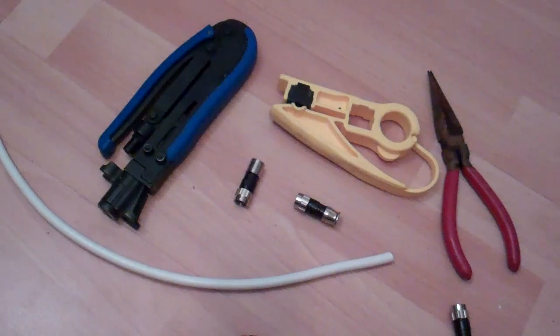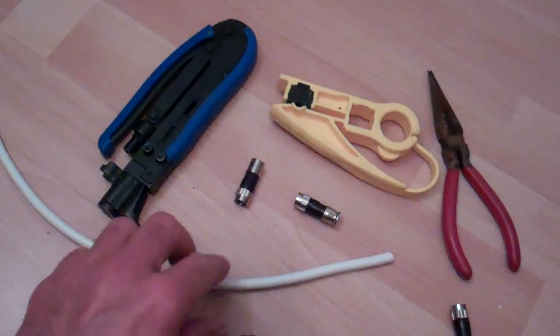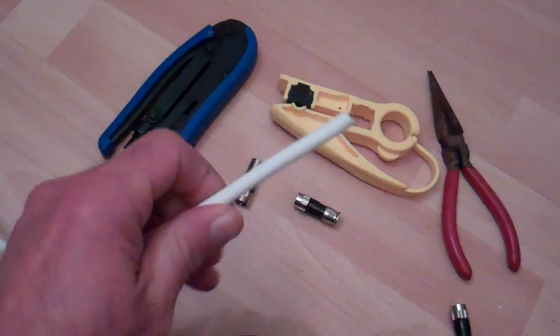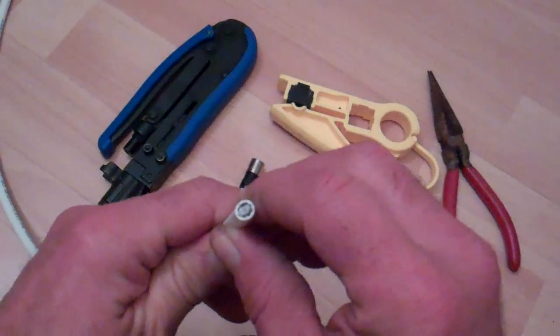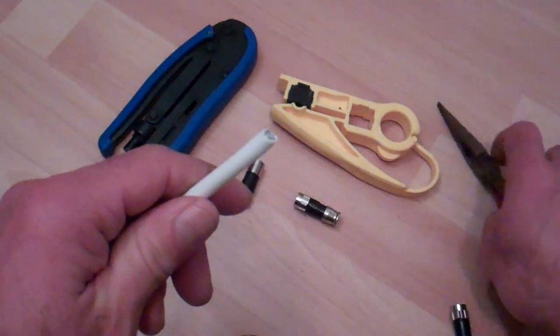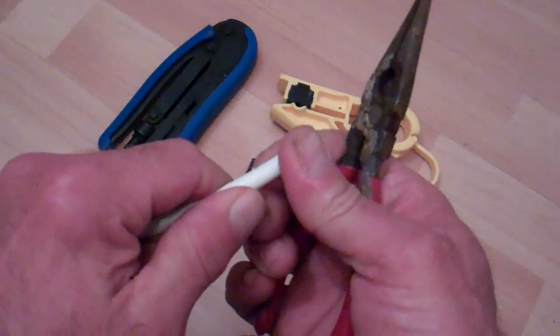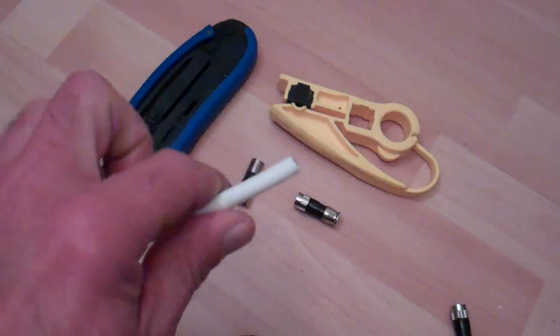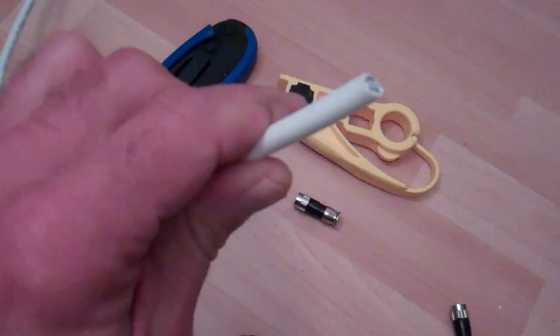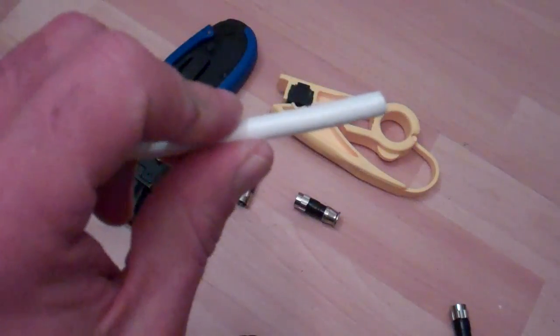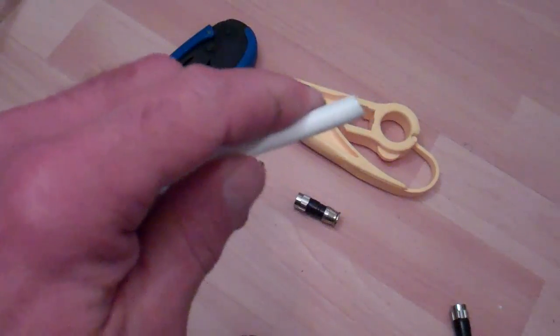In this video I'm going to make a coax cable to connect from my television to my satellite receiver. So this cable we have here is RG6, which is a good quality coax cable.